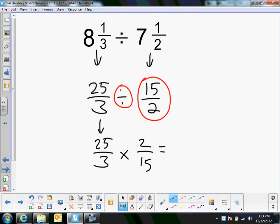And then I'll see if I can reduce. I can. 5 goes into both of those. 5 goes into 25 five times, and it goes into 15 three times. That's the only thing I can reduce. So I'm multiplying now, 5 times 2 is 10, and 3 times 3 is 9. And then 9 goes into 10 once, and there's only one ninth left over.